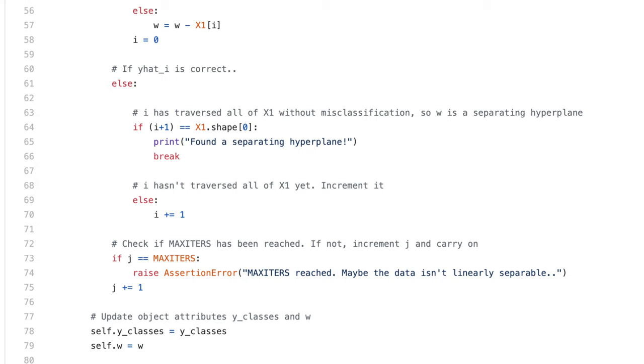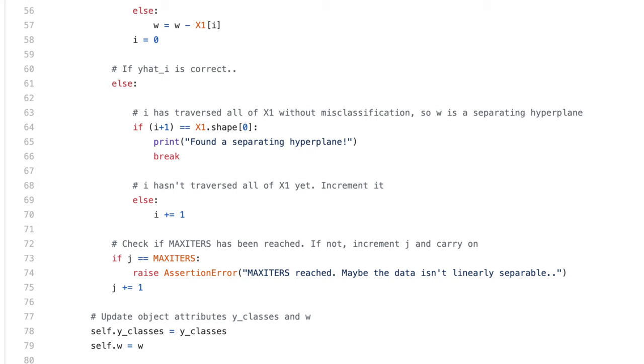Once the program scans every element of x without finding a misclassified point, it updates the class attributes y classes and w. Alternatively, if max iters is reached, the program throws an error.